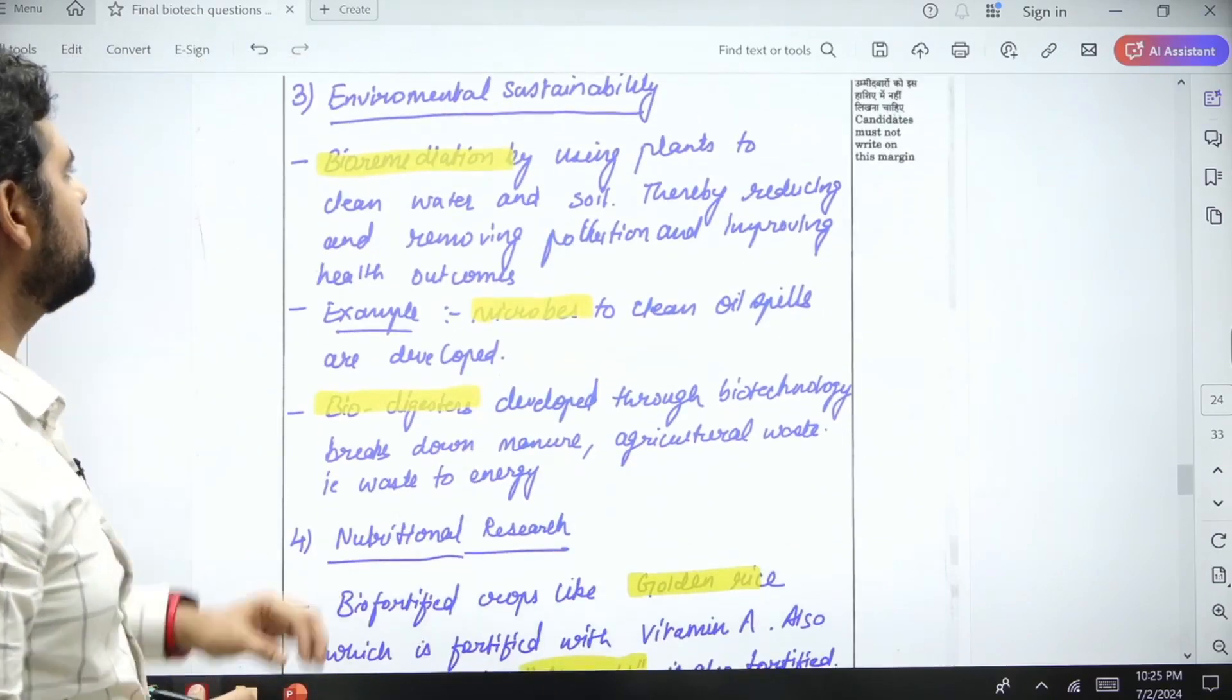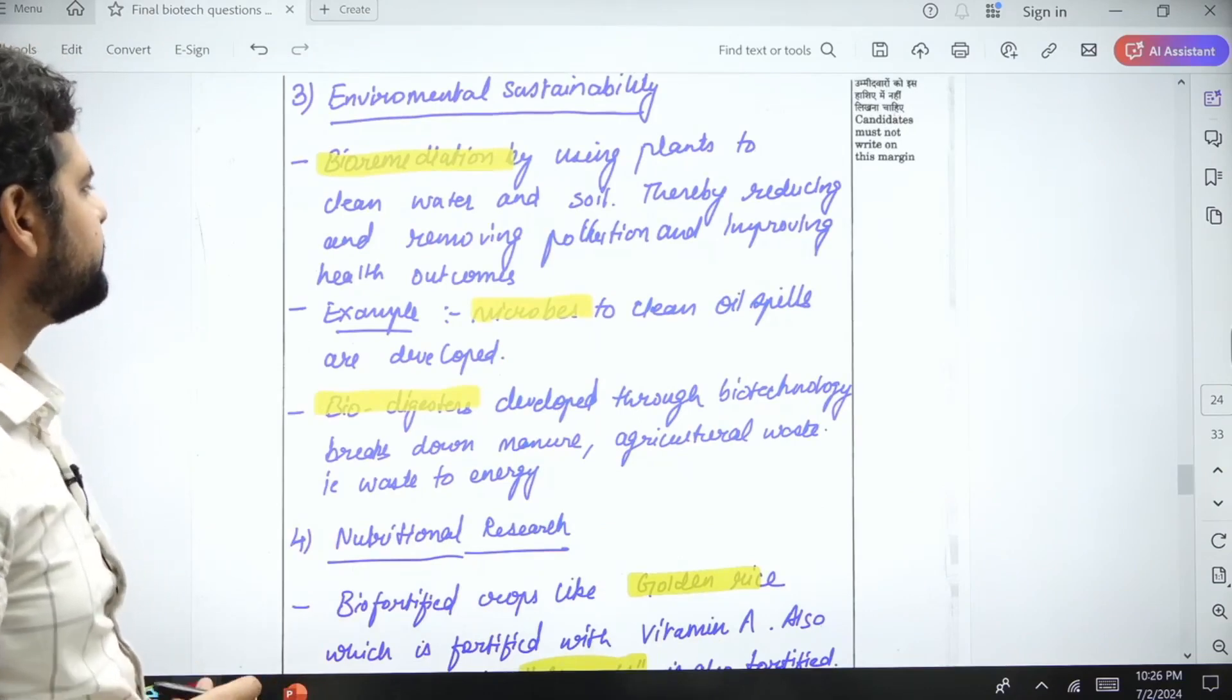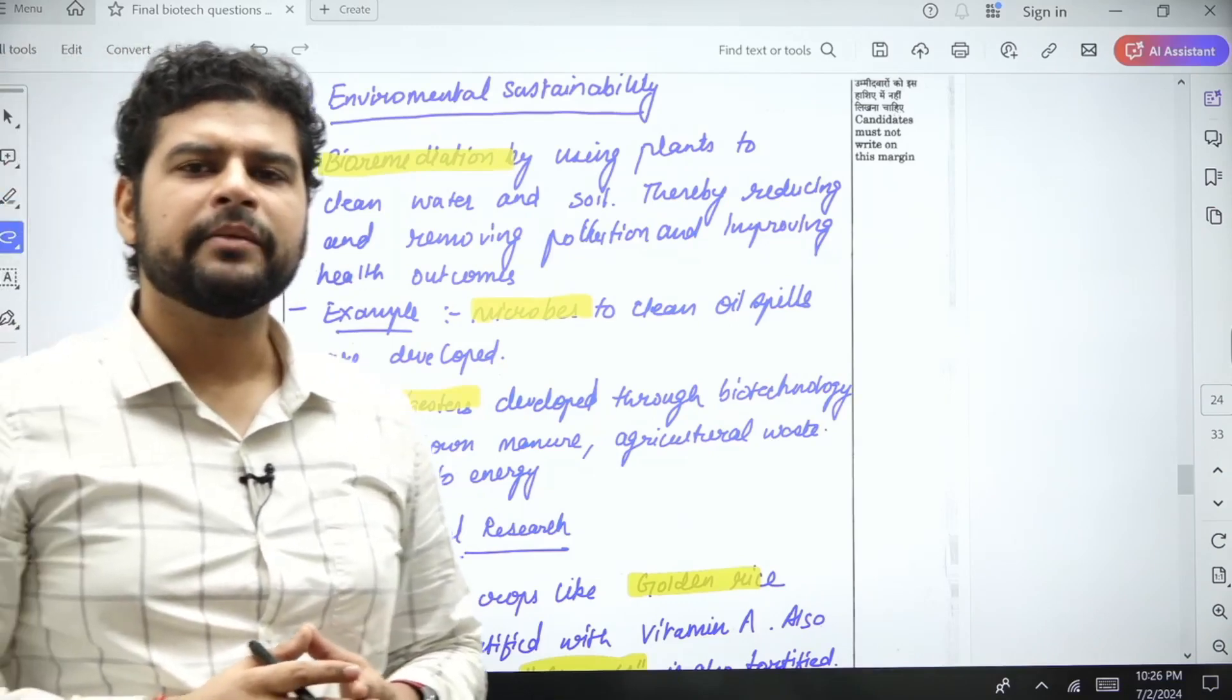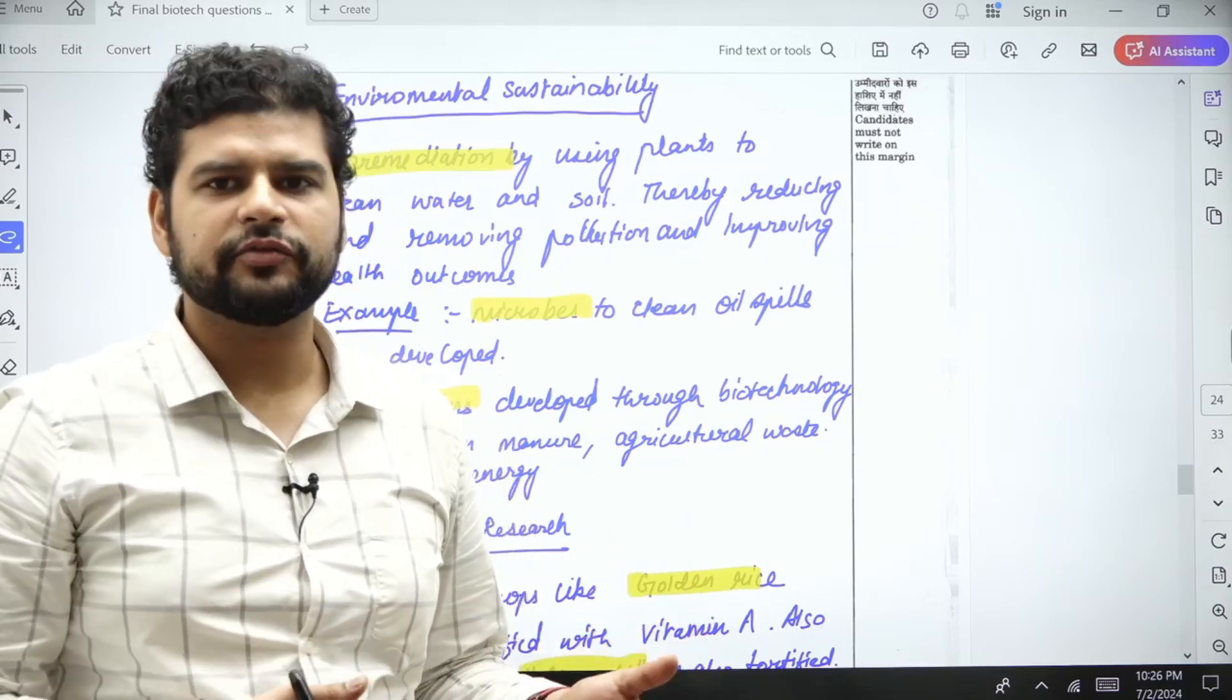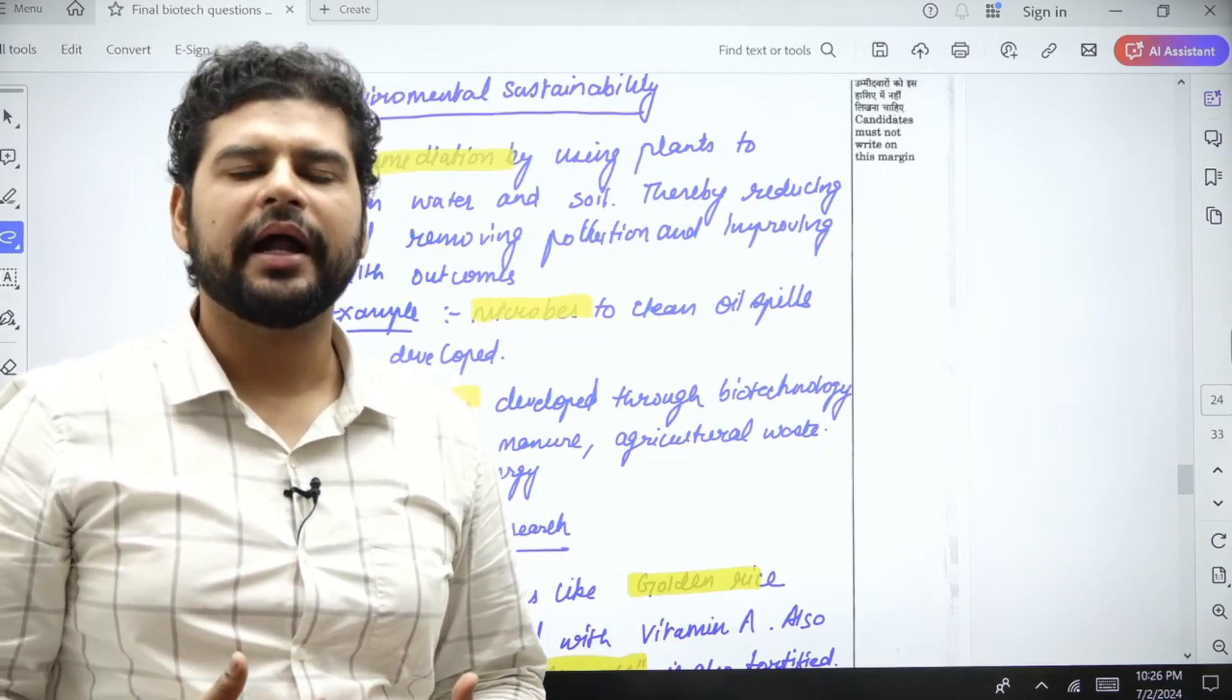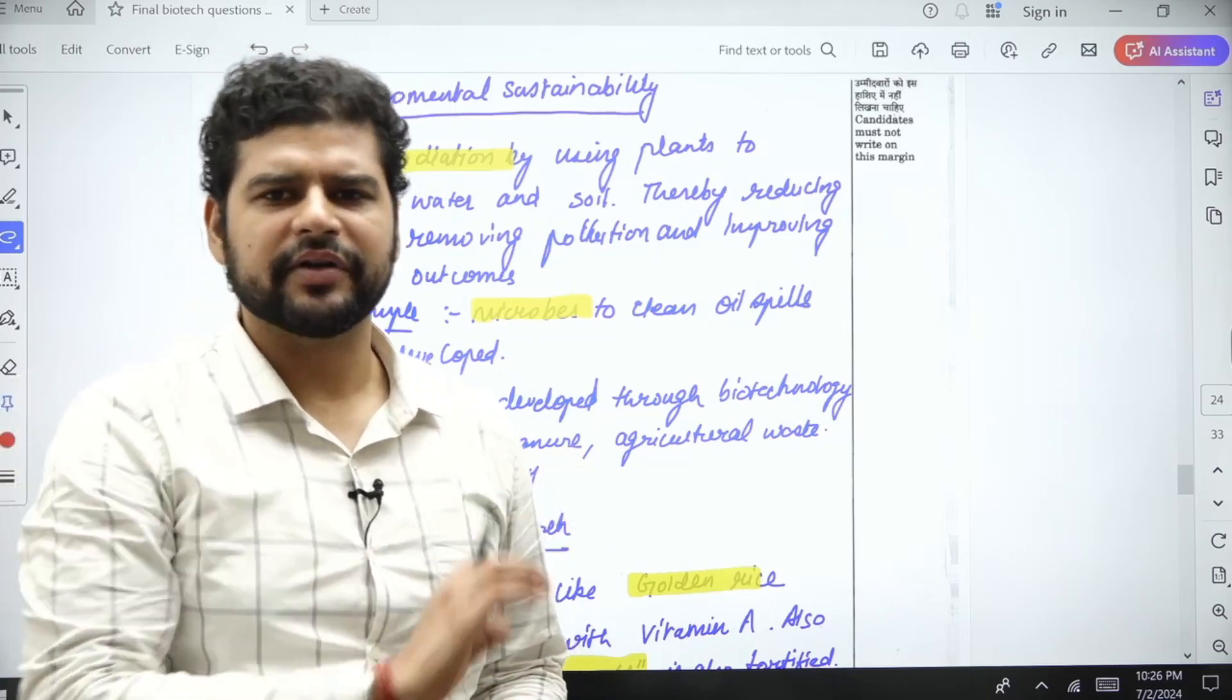Next section we come to is environmental sustainability. A lot of issues in the environment are faced by poorer people especially. Rich people can buy air filters for their room, but what about poor people? Keeping this in mind, the government also had the idea of replacing the gas stove with LPG. I'm just trying to relate things so you understand how things work.